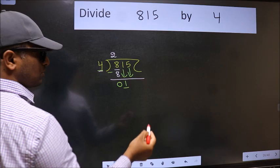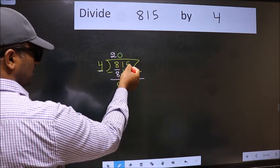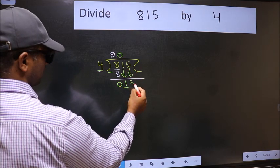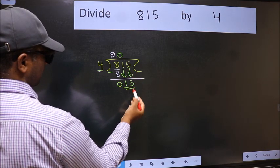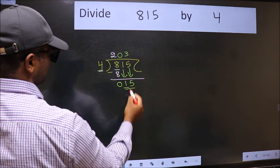The rule to bring down the second number is we should put 0 here. Then only we can bring this number down. Now, 15. A number close to 15 in the 4 table is 4 times 3 is 12.